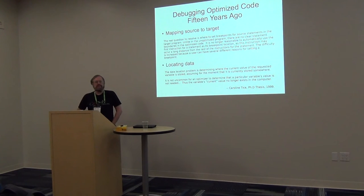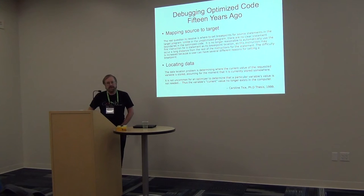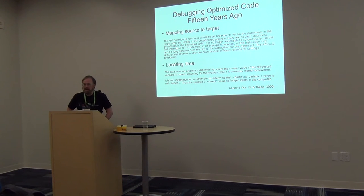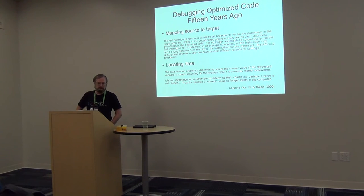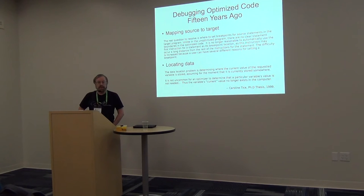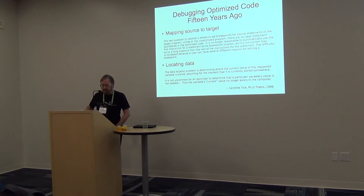Let's talk about debugging optimized code. Carolyn Tice wrote a PhD thesis on debugging optimized code about 15 years ago, and I quoted a couple of parts of what she wrote. 15 years ago we had DWARF version 2, which was released in '92. The big problems then were where to set breakpoints in a way that made sense to the user, and where to find data. As she mentions in her thesis, there was more research on where to find data than on mapping the source lines to the object.